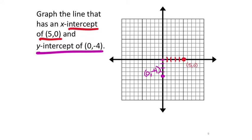Now that I have those two ordered pairs, I'm ready to put the line on the graph. That line goes exactly through the red and purple points — the x-intercept and the y-intercept.